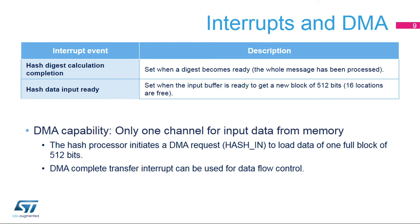An interrupt in the Nested Vectored Interrupt Controller, or NVIC, is triggered when a hash digest has been successfully calculated, or when the hash processor is ready to accept a new block of data. In Direct Memory Access, or DMA mode, requests are generated internally for incoming data. The DMA channel must be configured in memory-to-peripheral mode with a data size equal to 512 bits.